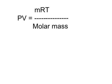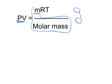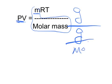So our resulting equation then is PV equals mass divided by molar mass times RT, where this mass right here is in grams, and this molar mass is in grams per mole.